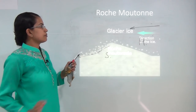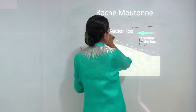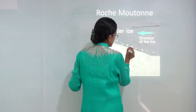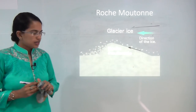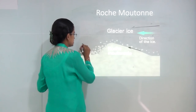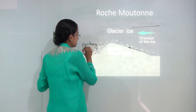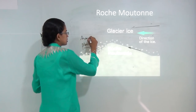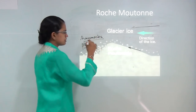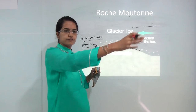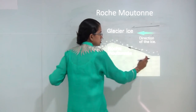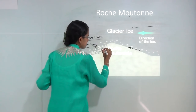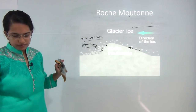Roche moutonnée is different from crag and tail because the upstream activity is abrasion while the downstream activity is plucking. Roche moutonnée appears as small hummocks or small hills across the glacial region. From where the glacier moves on, you will see small hills with one side that is very smooth due to abrasion and the other side with a jagged pattern.